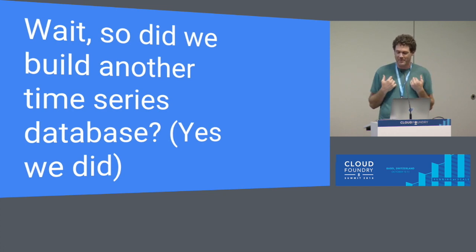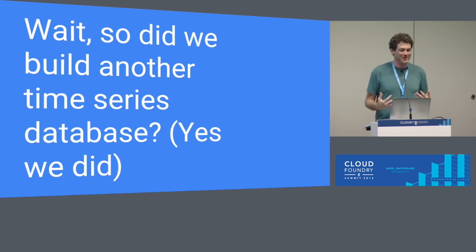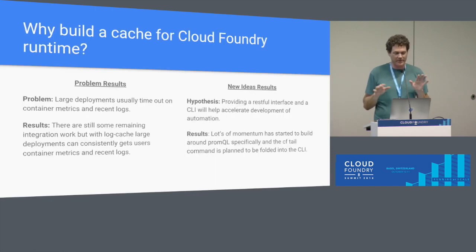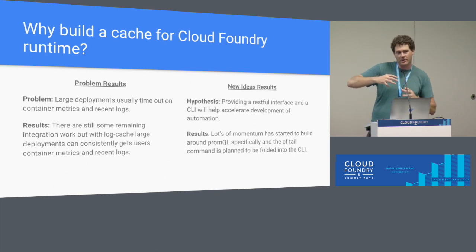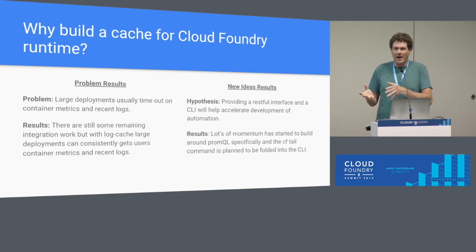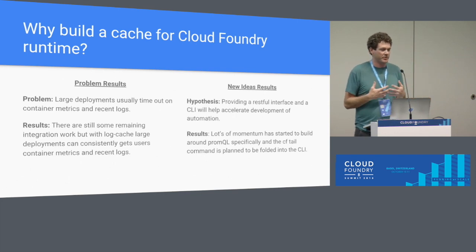I'm familiar with the axiom of 'don't write your own database,' so there was a part of me that felt a little hoodwinked by my engineers. But the important question was: did we solve the problem? Going back to the reasons why LogCache was built — the original problems of container metrics and logs recent — there's still a little bit of integration being untangled between the Cloud Controller and the CF CLI. But in terms of those two problems, we can confidently say we have solved them. Testing out our hypothesis that a RESTful interface is a powerful building block, we were also able to achieve positive results there.